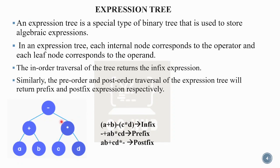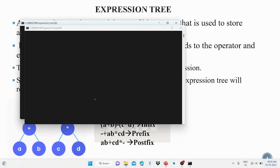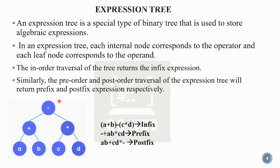For pre-order traversal we get the prefix expression. Root first — minus. Then go left: the node is plus, so minus plus. Go further left — A cannot go further left, so value is A. Then root plus, then right B. So minus plus A B. Then go to the right subtree: star. Left C, right D. So the full prefix expression is minus plus A B star C D.